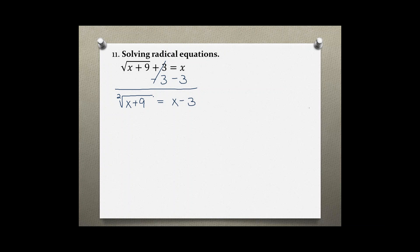Now this has an index of 2, so we can raise it to the power of 2, and we have to do that to both sides. On the left side, the square root and the square cancel each other out, so we are left with x plus 9. And on the right side we have x minus 3, x minus 3.